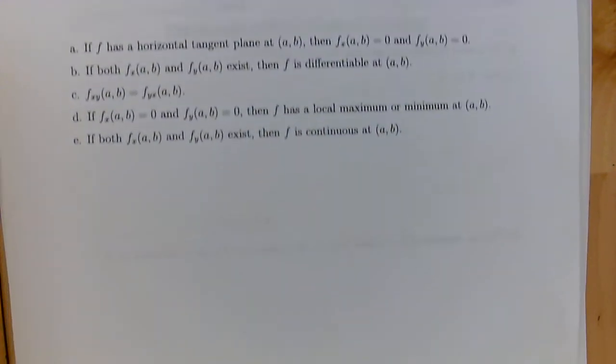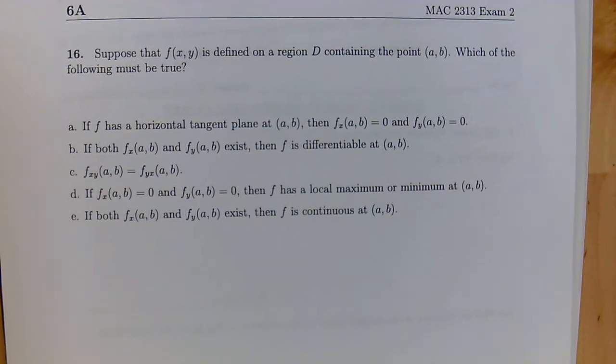All right, so that takes care of all of those questions here. And then let's move on to number 16, the last multiple choice. Suppose that f(x,y) is defined on a region D containing the point (a,b). Which of the following must be true? If f has a horizontal tangent plane at (a,b), then f_x at (a,b) is 0 and f_y at (a,b) is 0.